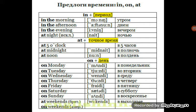Когда же мы используем at? At плюс точное время. Например, в пять часов, семь часов — это точное время. В полночь также считается точным временем. At five o'clock — в пять часов. At midnight — в полночь. At noon — в полдень. Итак, at мы используем с точным временем.